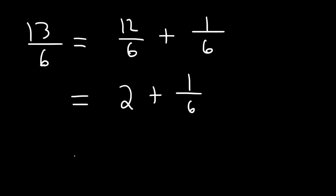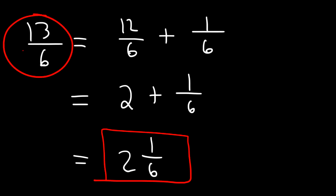Now let's work on the second example, which was 13 over 6. 12 is divisible by 6. So I'm going to break down 13 over 6 as 12 over 6 plus 1 over 6. 12 divided by 6 is 2. And so 2 plus 1 over 6 is 2 and 1 sixth. As you can see, this technique, if you master it, can help you to quickly convert an improper fraction to a mixed number.